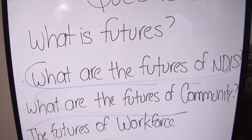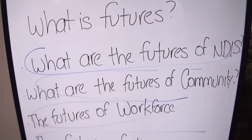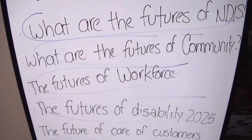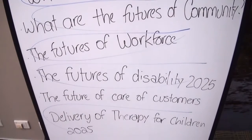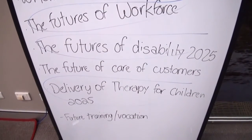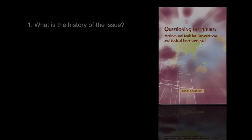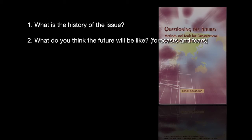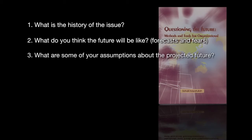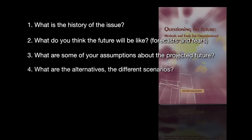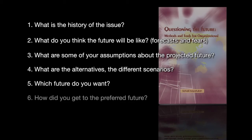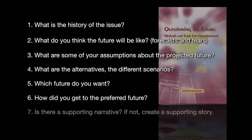When you say research question, you mean the topic they're going to explore? Yes, the topic. And then we set up seven questions. If my question is, what will health look like in 2025? Question one: what's the history of your question? Question two: if current trends continue, what will it look like? Question three: assumptions. Four: alternative futures. Five: preferred. Six: the backcast — how did we get there? Seventh: is there a supportive story?